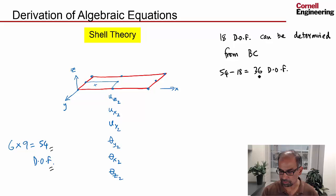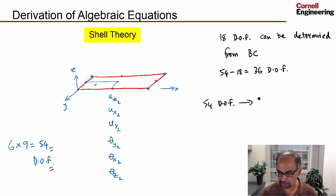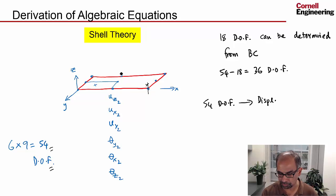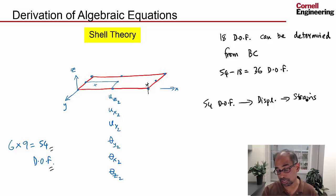These 36 degrees of freedom are determined such that the potential energy of the structure is minimized. From our 54 degrees of freedom, by interpolation we can construct the displacement anywhere in the structure. Once I know the degrees of freedom, I can reconstruct how much a particular point would move. And once I know the displacement field, I can differentiate it to find the strains — the six strain components.